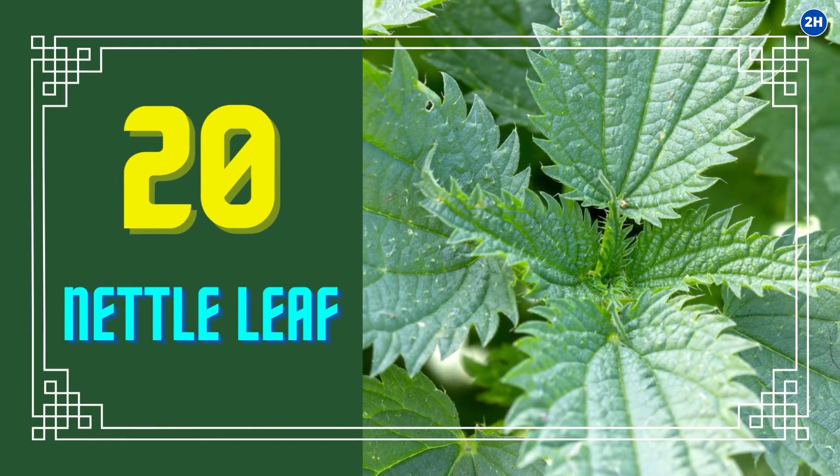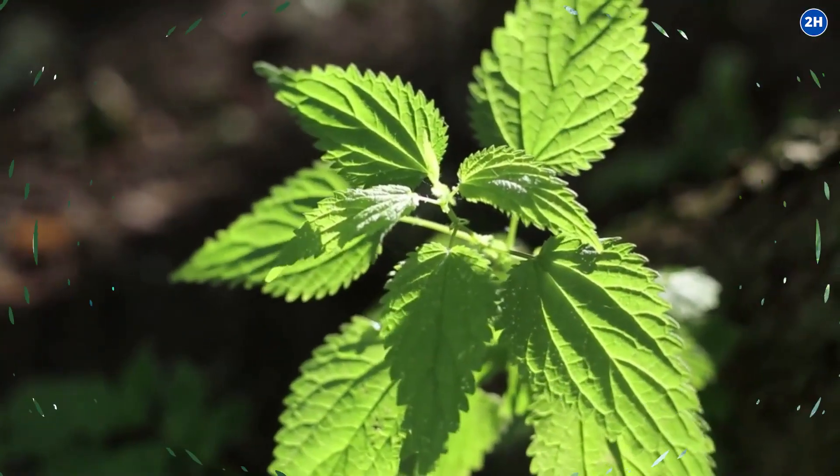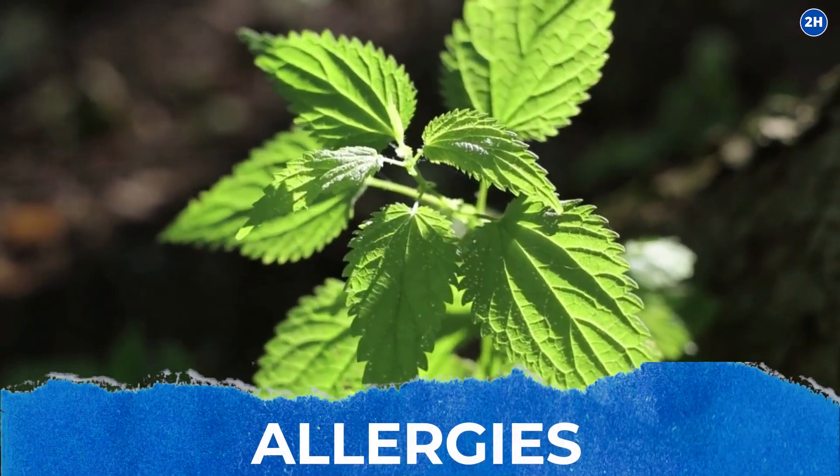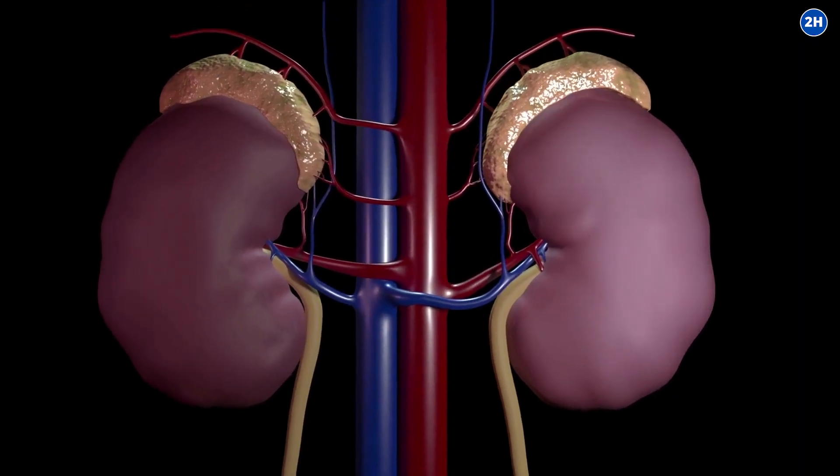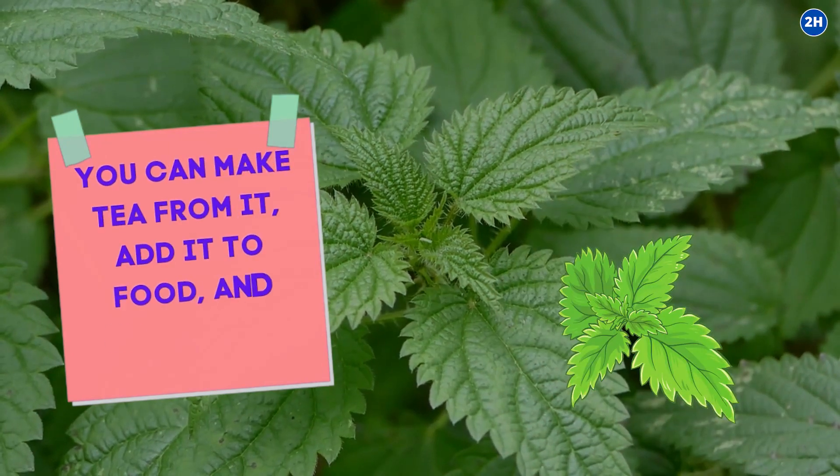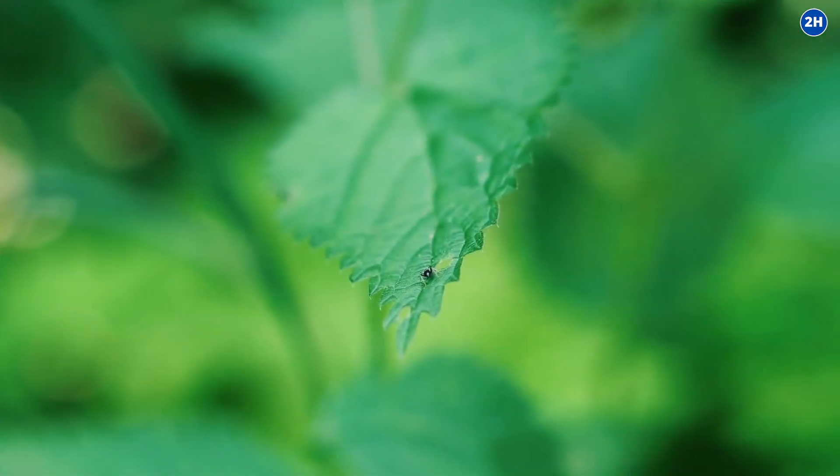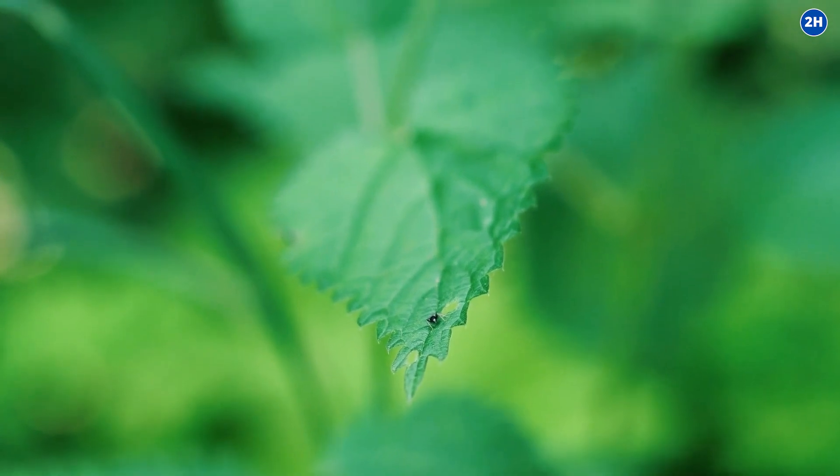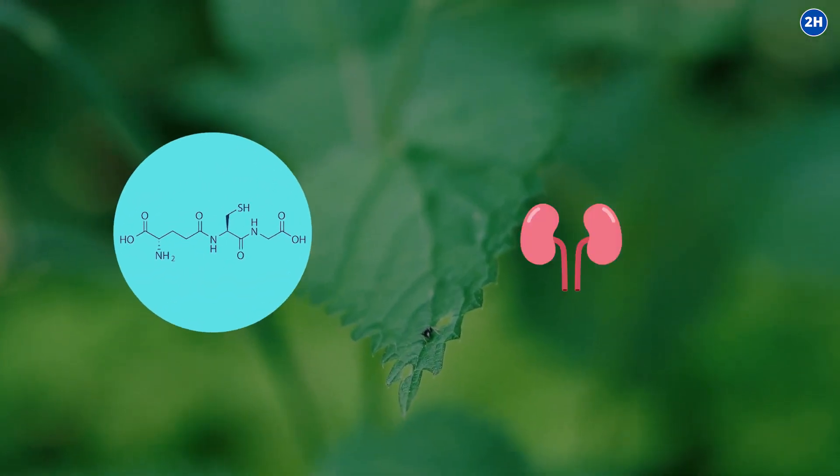20. Nettle leaf. Nettle is an excellent herb to use against allergies, but there is also evidence that it is good for the kidneys. You can make tea from it, add it to food, and supplement with it. It increases the levels of the powerful antioxidant glutathione in your kidneys.